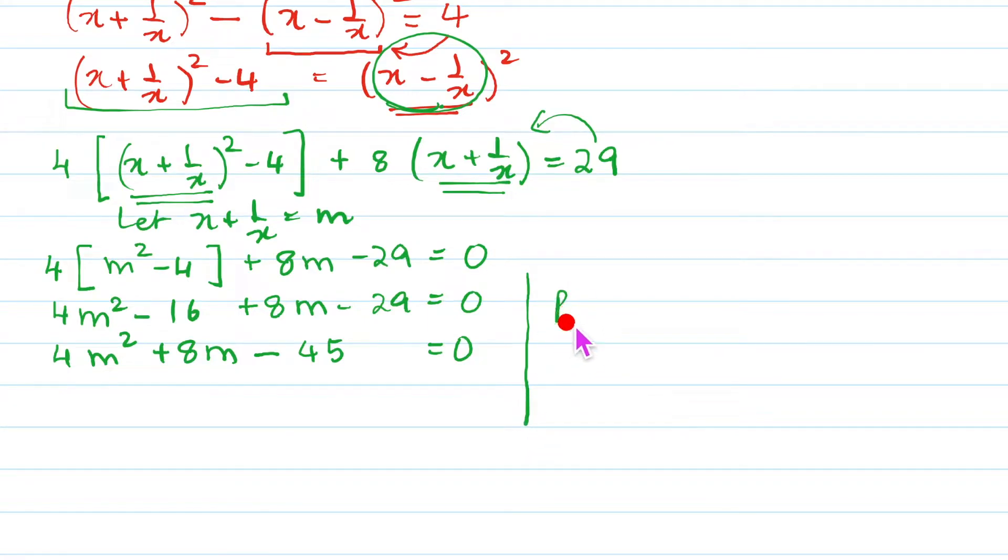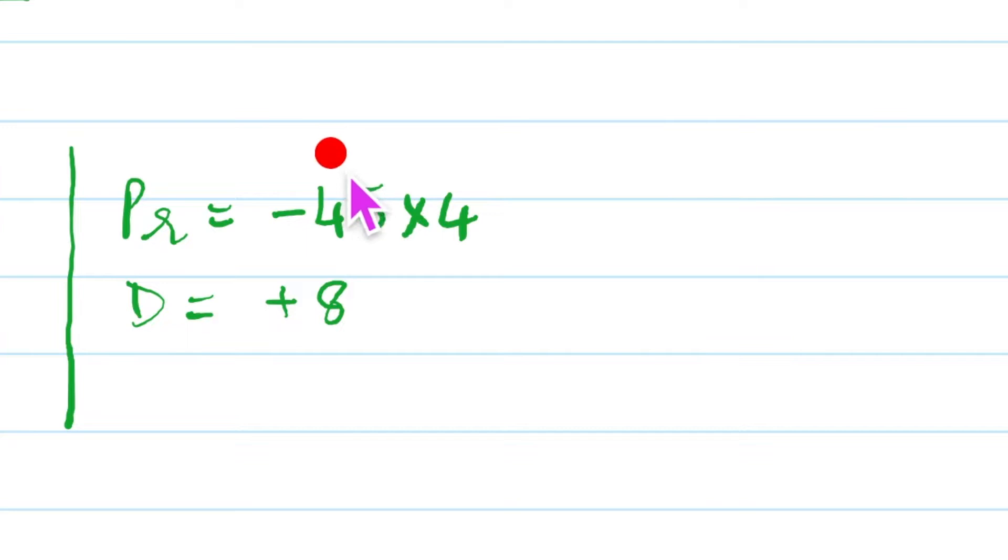So what is our product? The product is this multiplied by this. So it is minus 45, 5 into 4. And because it is minus product this plus 8 is going to give you the difference between the factors. So let us check it out. This is 9 into 5 and this is 2 into 2. The difference is 8. Can you see this? 5×2 is 10 and 18. Can you see that? So 9 into 2 is 18.